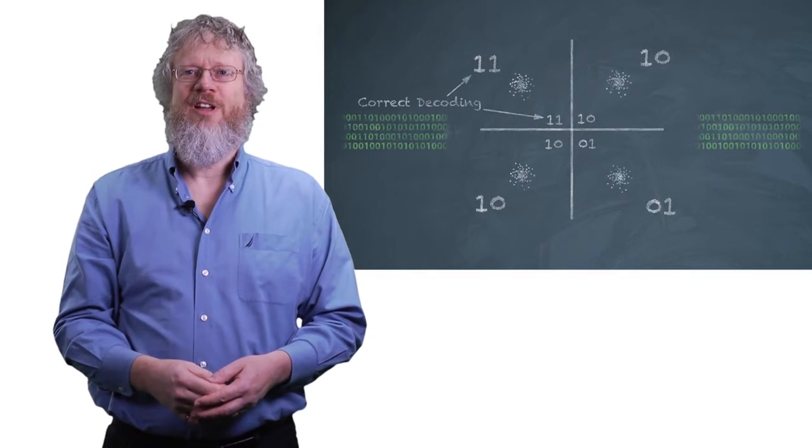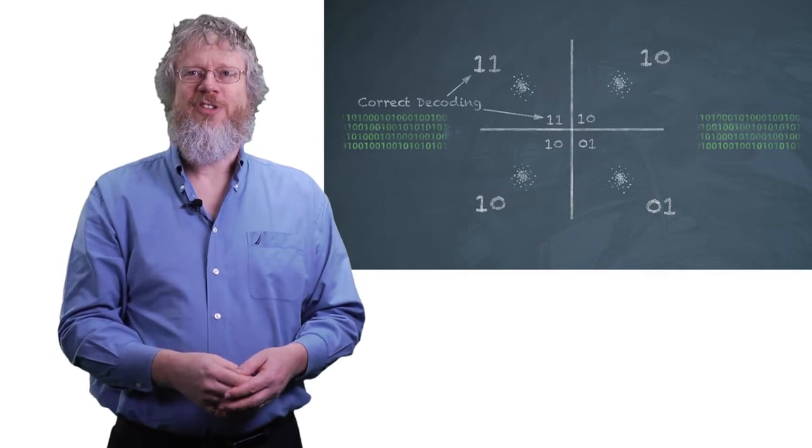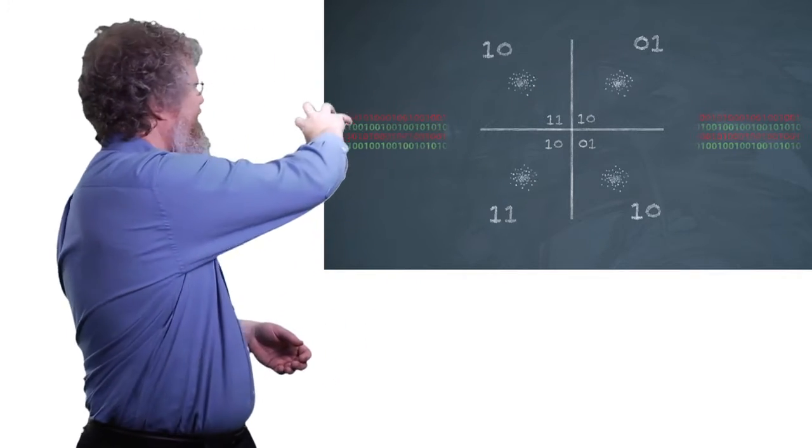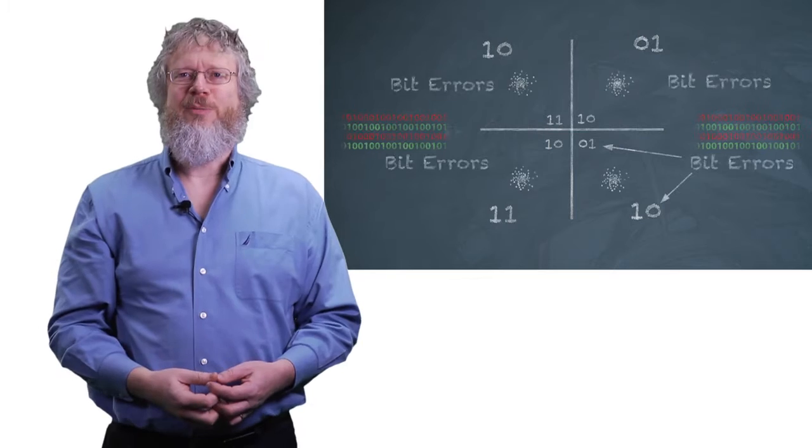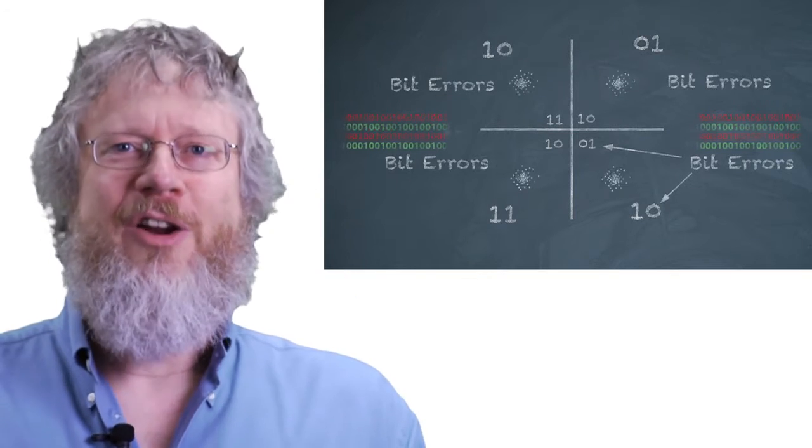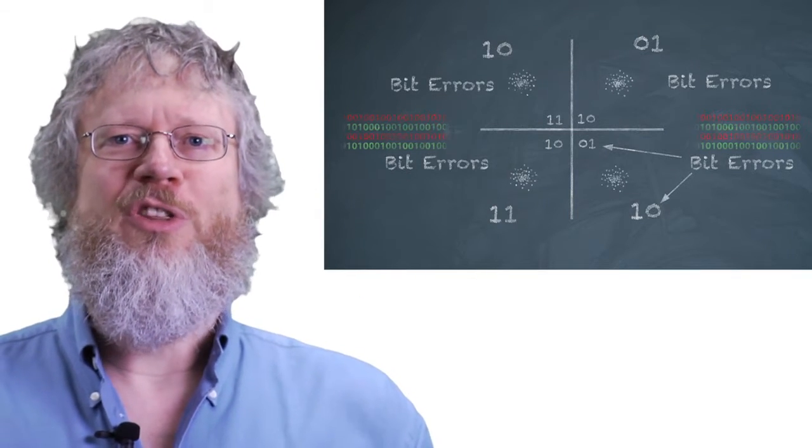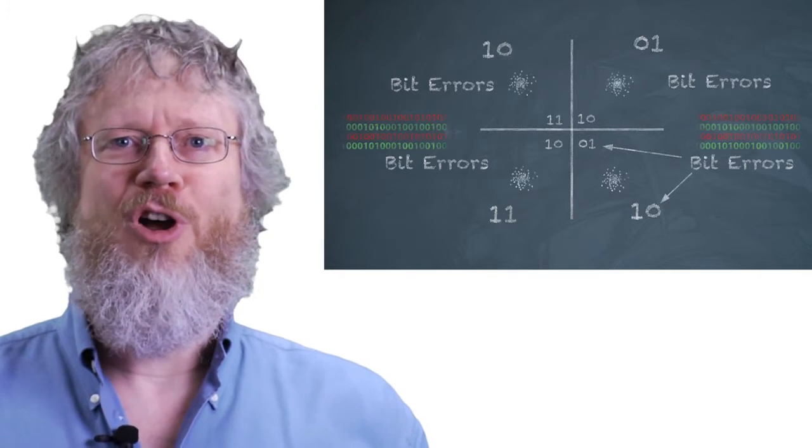If that coordinate is rotated by 90 degrees in either direction, we can get a cycle slip where thereafter we'll be decoding the wrong symbol because we're in the wrong quadrant.